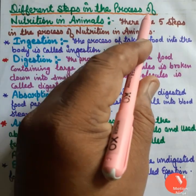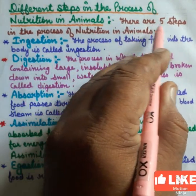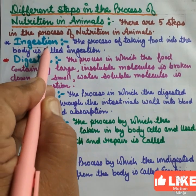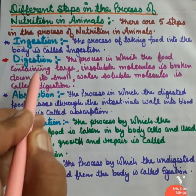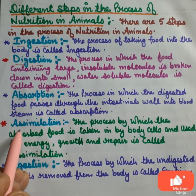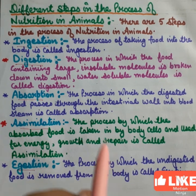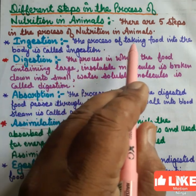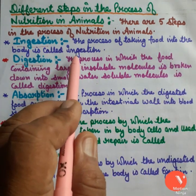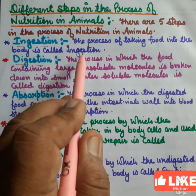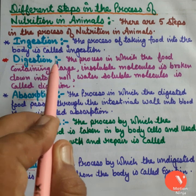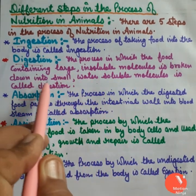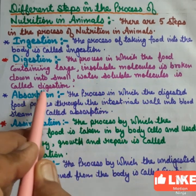Different steps in the process of nutrition in animals. There are five steps in the process of nutrition in animals. First is ingestion. Second, digestion. Third is absorption. Fourth is assimilation. And fifth is egestion. The process of taking food into the body is called ingestion. The process in which the food containing large insoluble molecules is broken down into small water-soluble molecules is called digestion.